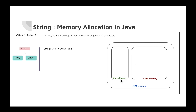Stack memory is generally used for the execution of the program, and heap memory is mostly used for storage. JVM has these two parts - stack and heap. In the stack it is just for execution, and heap is used for storage. Within heap memory there is one pool of memory called the string constant pool. We are going to see very soon how we can use this string constant pool.